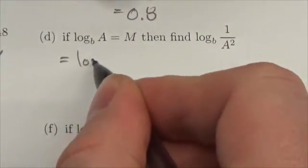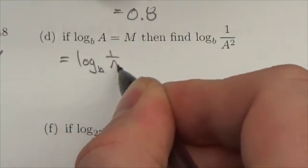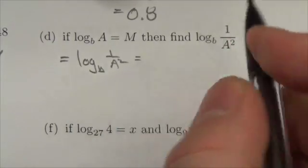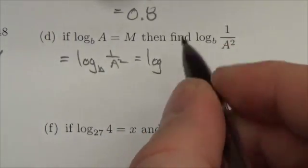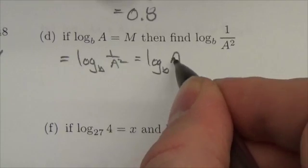So I've got the log base b of 1 over a squared. Now first of all I can write this as the log base b of a to the negative 2.